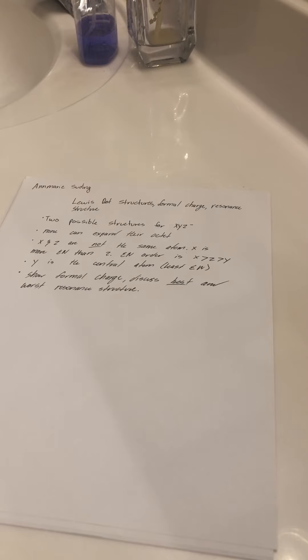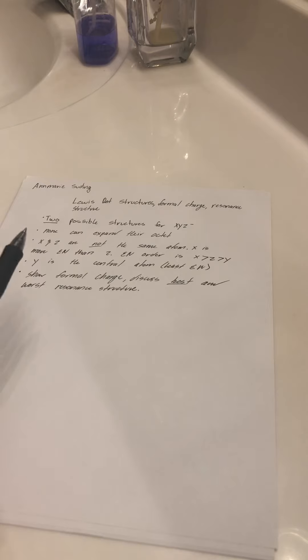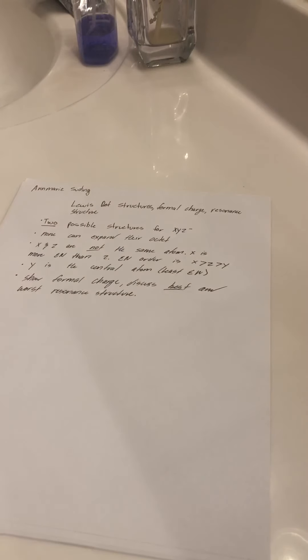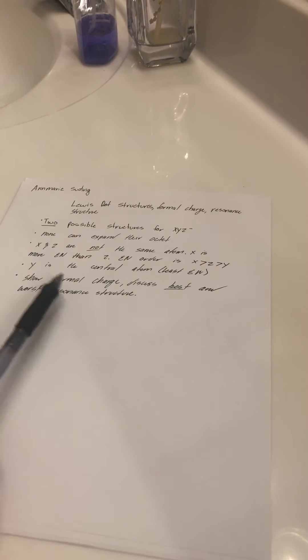For this activity, we're given that two possible structures are possible for XYZ. We don't know which atoms or elements they are, but we know it's XYZ and it has a negative charge, meaning it's gaining one electron. Some rules: none can expand their octet, X and Z are not the same atom, X is more electronegative than Z, and Z is more electronegative than Y, because Y is the central atom.